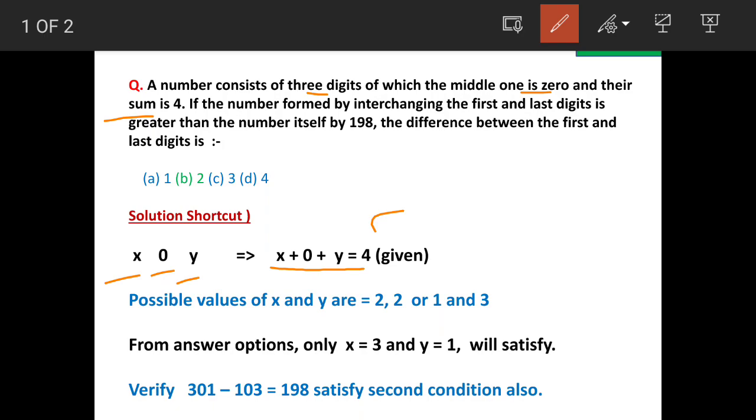So this is what the first part of the question says. Then it further says, if the number formed by interchanging first and last digit is greater than the number itself by 198, then the difference between first and last digit is, the answer is option B, 2.